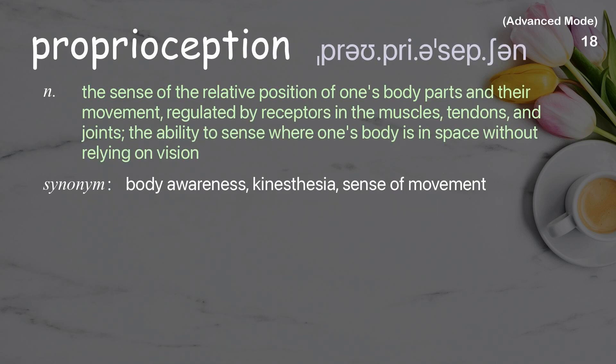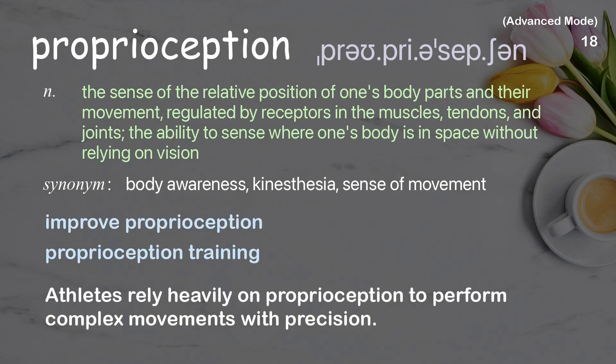Proprioception: the sense of the relative position of one's body parts and their movement, regulated by receptors in the muscles, tendons, and joints; the ability to sense where one's body is in space without relying on vision. Examples: improve proprioception, proprioception training. Athletes rely heavily on proprioception to perform complex movements with precision.